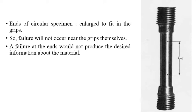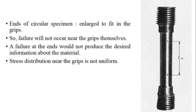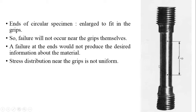A failure at the ends would not produce the desired information about the material because the stress distribution near the grips is not uniform. As per St. Venant's principle, which is very famous in strength of materials, the stress distribution is not uniform near the ends because the load is applied there. The stress near the application of load is always greater than that away from the load. Therefore, the ends of the specimen are enlarged so that failure occurs somewhere in the middle.